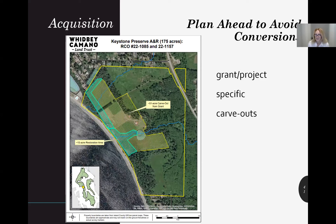Make sure RCO grants are used to acquire property designated for salmon habitat and recovery forever. Even though some infrastructure may be allowed, most will cause compliance issues, and the conversion and property replacement recertification process is onerous. To avoid future conversions, plan ahead and carve out incompatible and ineligible uses from the scope of your project. You may need to adjust the legal description, update maps, project costs, and the deed of right. Anticipate future needs like expansions of existing roads, well sites, utilities, and access easements for neighboring properties. Remember to work with your grant manager — we are always here to help.